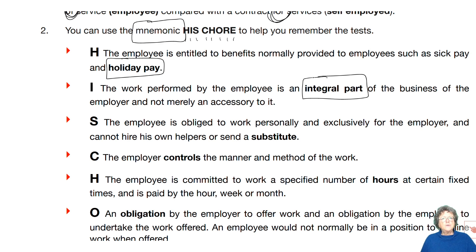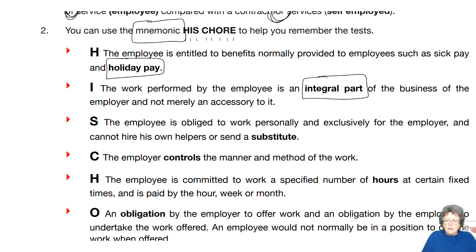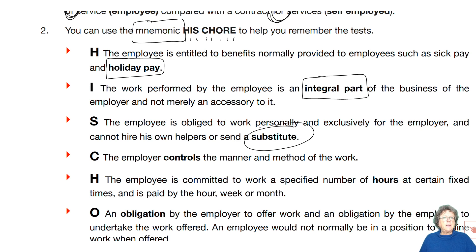An employee is obliged to work personally and exclusively for their employer and cannot hire helpers or send in a substitute. If I were an employee, I could not send my husband to do the work on my behalf. Whereas if you were self-employed — say a bricklayer — you could send somebody equally skilled to finish the job in your place.